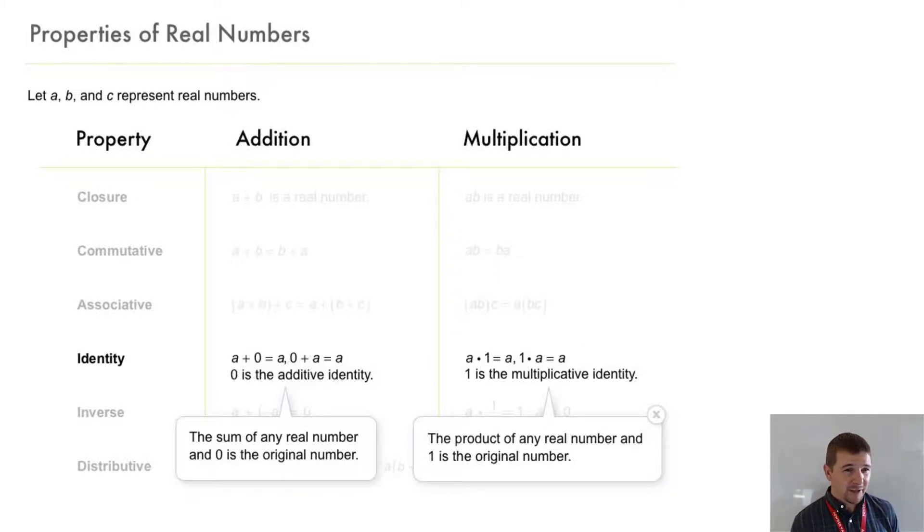The identity property of addition: a plus zero equals a. So adding zero doesn't change the value of a. Zero plus a also equals a and zero is called the additive identity. The multiplicative identity or identity property of multiplication says a times one equals a. Also one times a equals a and we call the number one the multiplicative identity.